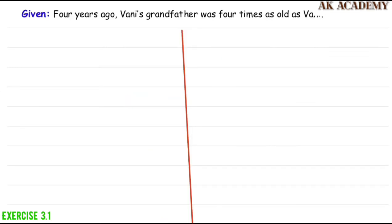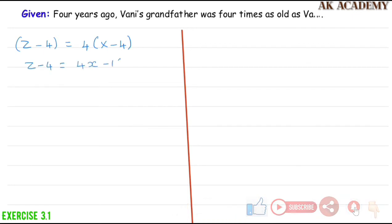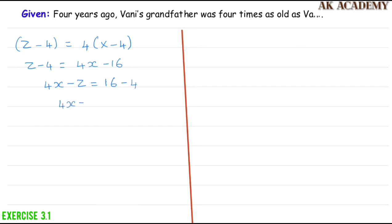For the third statement: four years ago, Vani's grandfather was four times as old as Vani. So (Z − 4) = 4(X − 4), which gives Z − 4 = 4X − 16, and therefore Z − 4X = −12, or equivalently 4X − Z = 12. This is our third equation.